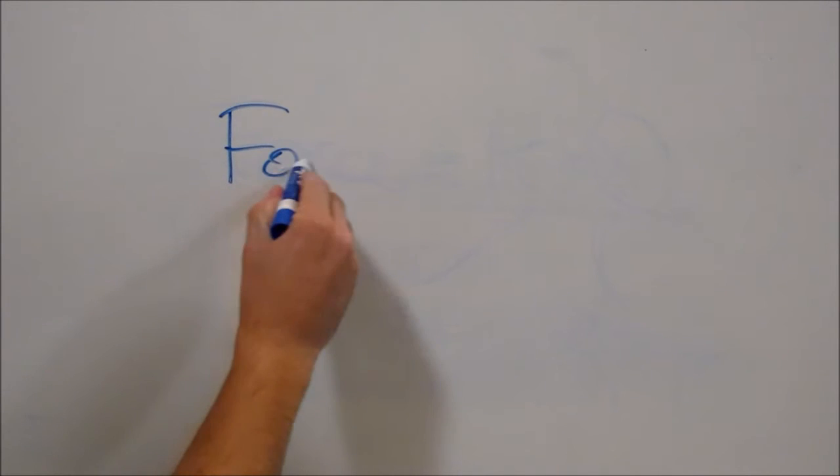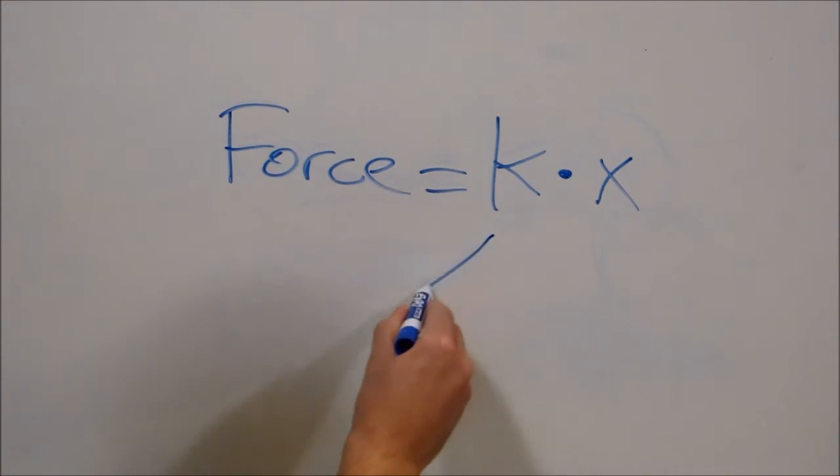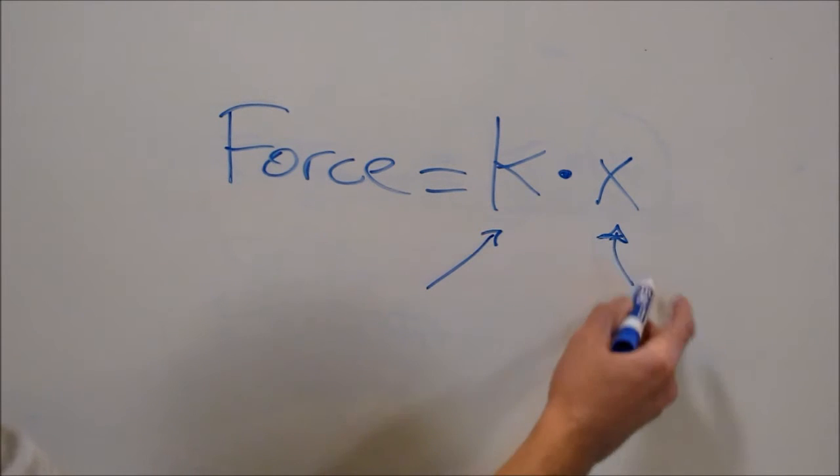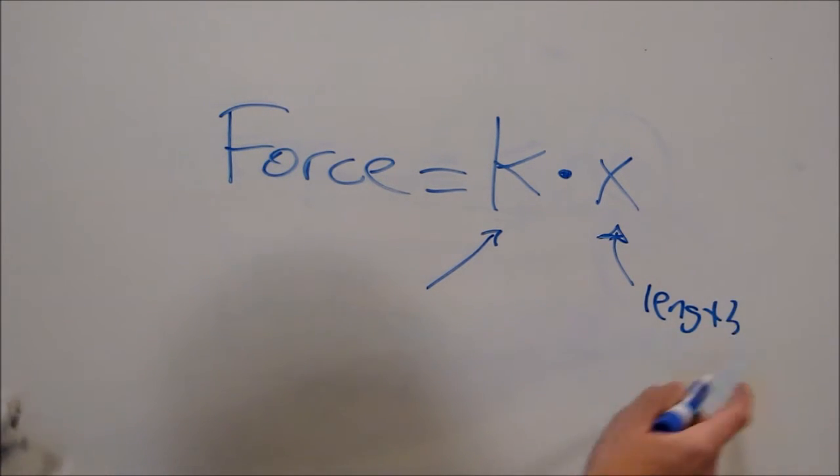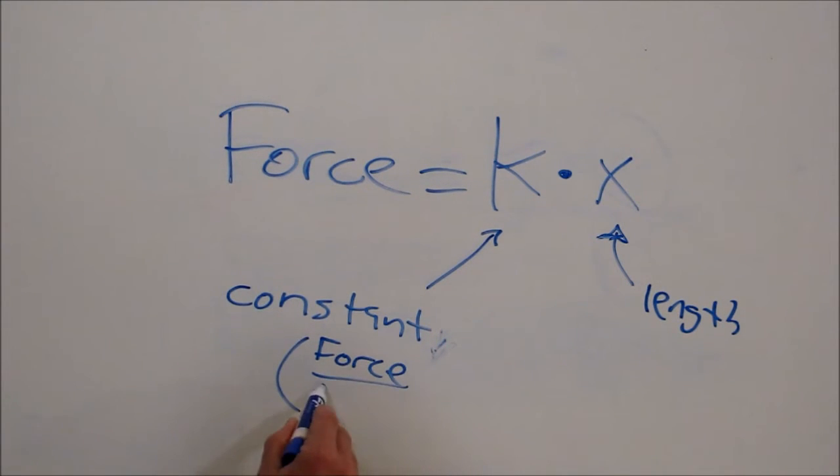Hooke's Law says force is equal to k multiplied by x, where x is length, k is a constant, and its units are force over length. Hooke's Law is everywhere. It's used a lot in engineering, it's used in applied science, it's been around since the 1600s. But one of the most common places you see it in everyday life is in regular springs.